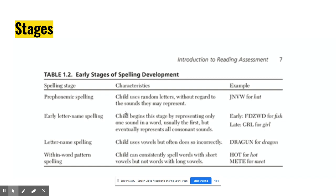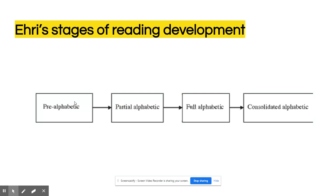This stages of spelling development was produced by Bear and is used to assess what foundational skills might be lacking. You'll see a lot of repetition amongst these models. And another very famous one is Ehri's stages of reading development. If you're familiar with LETRS training, language essentials for teachers of reading and spelling, a lot of the instruction that takes place there for teachers is a result of Ehri's stages of reading development.